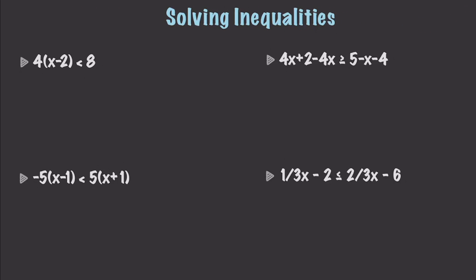Let's solve a couple more. Using the distributive property, we get 4x minus 8 is less than 8. Adding 8 to both sides gives 4x is less than 16, and then we find that x is less than 4.